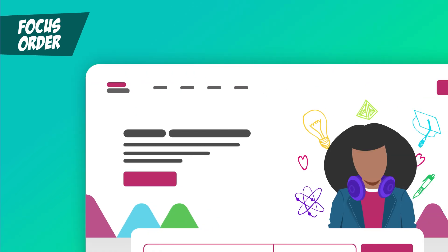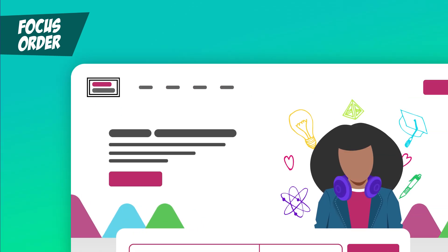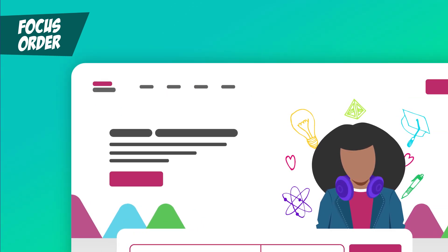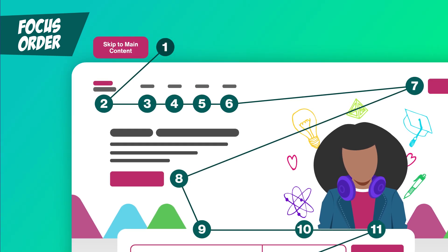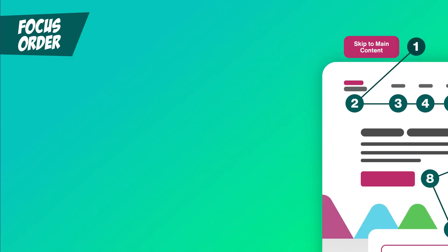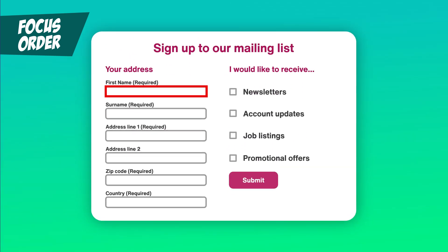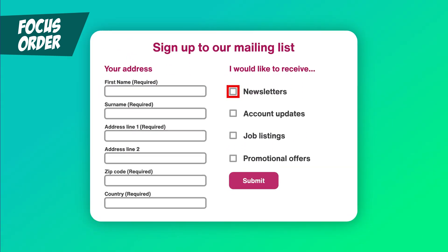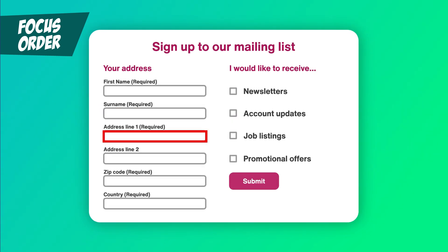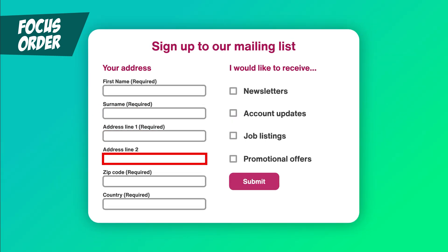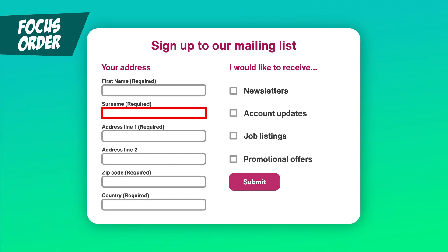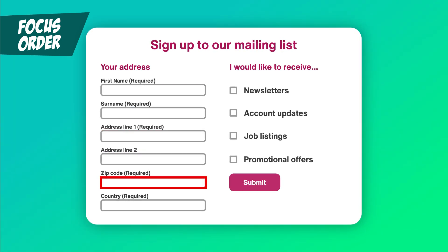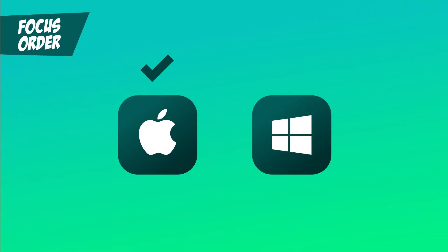Focus Order. When a user moves through the focusable elements on a page, they need to follow an order that makes sense. Typically it follows the visual layout of the page, but the point is to avoid confusion. Here's an example of how this can go wrong: this form was designed with checkboxes on the side, so the focus moves from the text fields to the checkboxes and back, which is weird and confusing. It isn't recommended to mess with tab index values unless you must, but good design practices should make focus order a lot simpler. Quick note — Apple's OS makes up its own focus order based on the visual layout of the page, so you will need to check focus order on another operating system, like Windows.